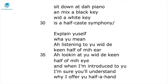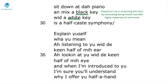In the ending of that stanza, he refers to Tchaikovsky sitting down at the piano and mixing a black key with a white key. This oxymoron shows that Agard — or the speaker — is reclaiming the term half-caste by associating being mixed race with highly respected art and music. He sarcastically asks: if Tchaikovsky mixes the black key and the white key, does that create a half-caste symphony? Does that mean the symphony is inferior? Of course the answer is no, highlighting how superficial and simplistic the racist term half-caste is.